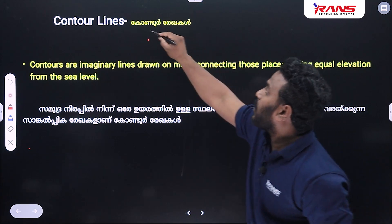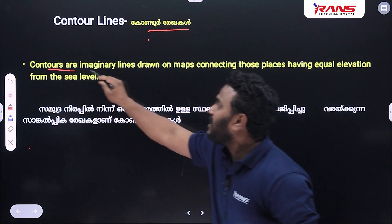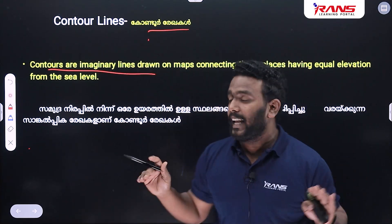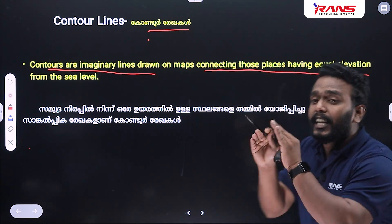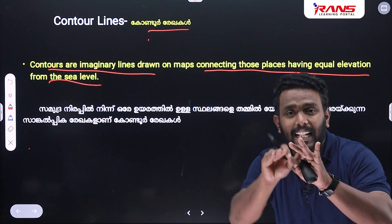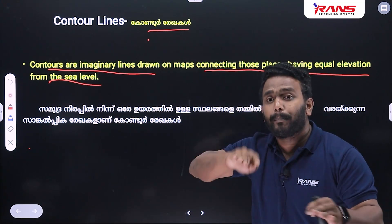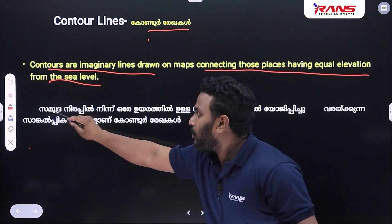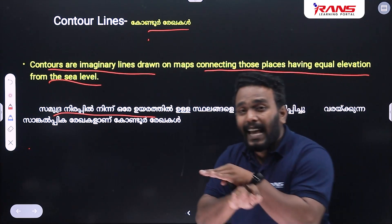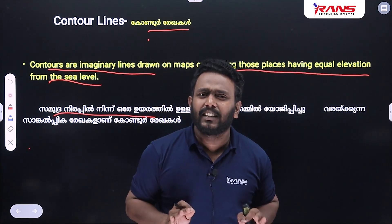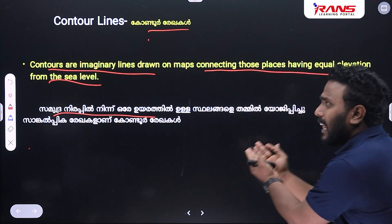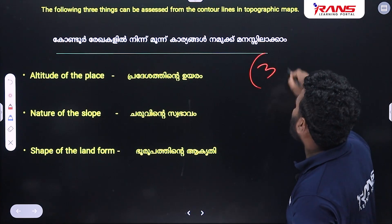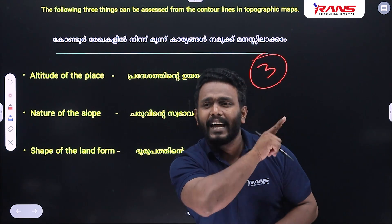Contour lines are the imaginary lines connecting those places having equal elevation from the sea level. Contour lines are the ones that are marked on a map showing elevation.